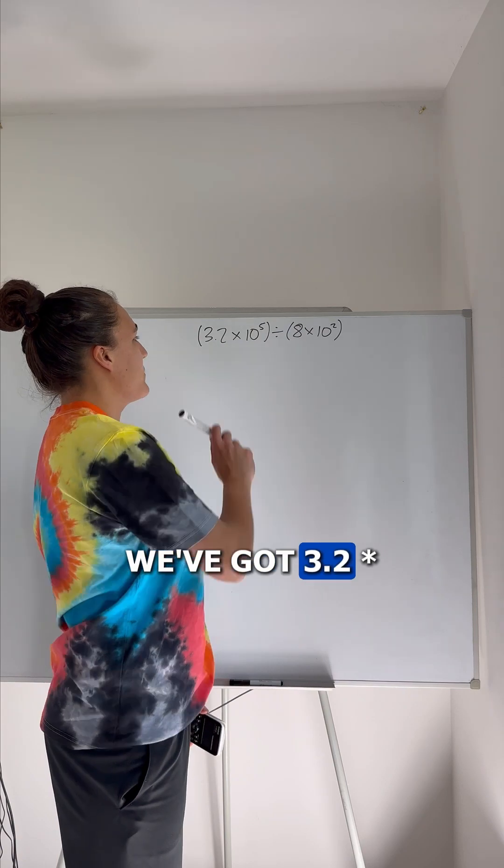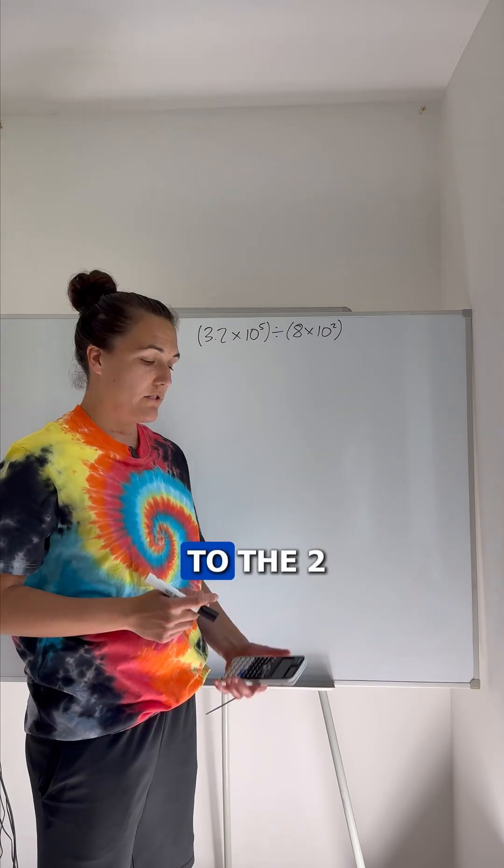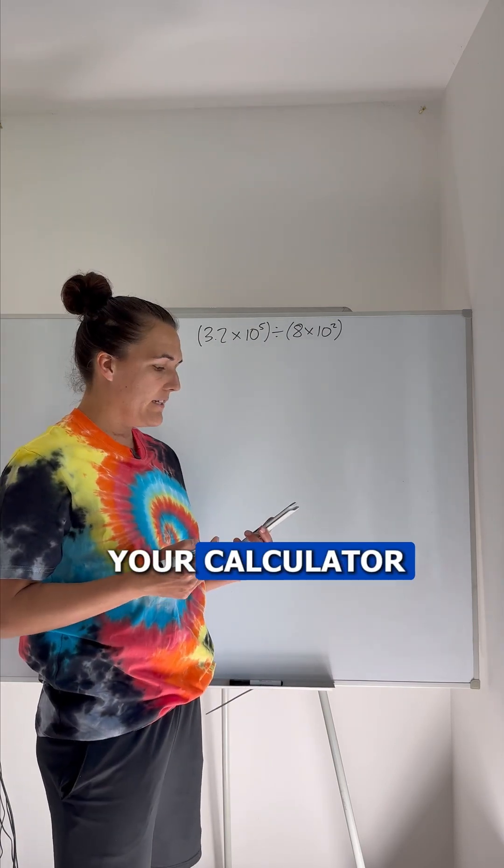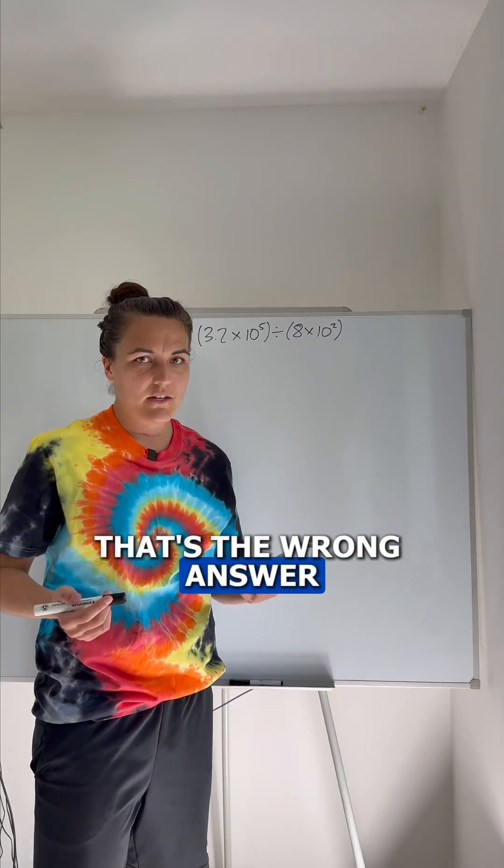So let's take this example. We've got 3.2 times 10 to the 5 divided by 8 times 10 to the 2. You type this into your calculator, what do you get? You get 400. That's the wrong answer.